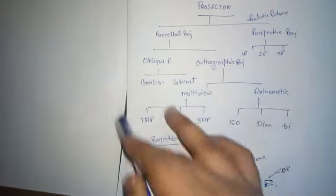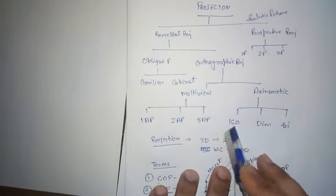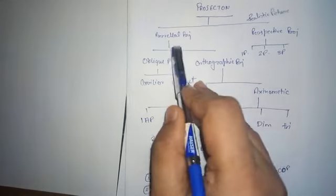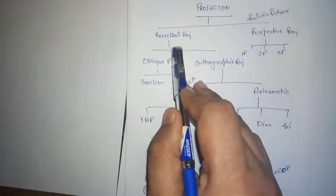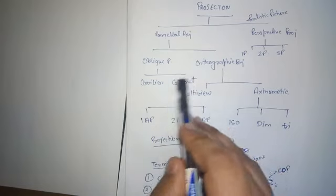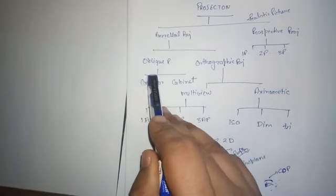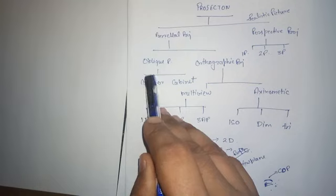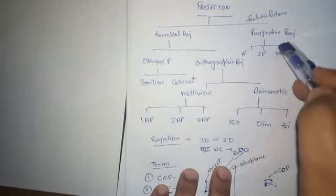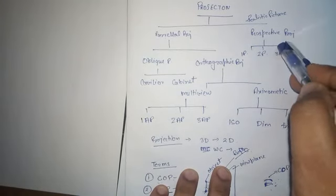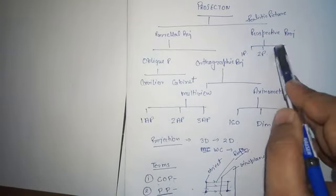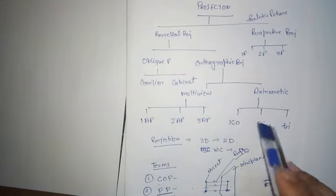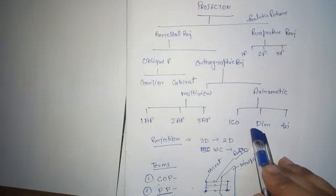These are the projection types. In the next lecture we will first discuss Parallel Projection, then Orthographic, then Oblique, and after that Perspective Projection. I hope you now understand the definition of projection and the types of projections. Thank you.